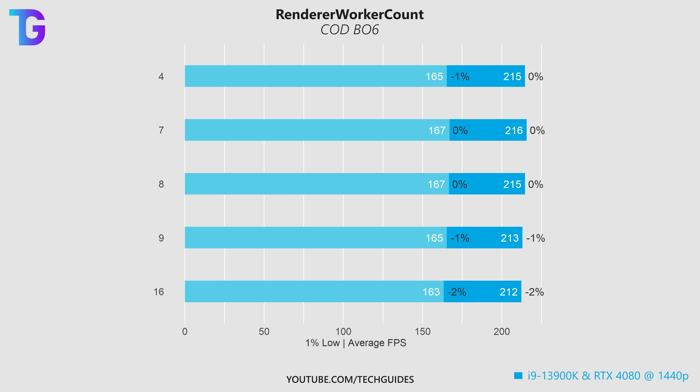On my primary gaming system — an i9-13900K with an RTX 4080 playing at 1440p — a renderer worker count of 7 yields the highest performance in both averages and 1% lows. The differences between different values are pretty small, but you really have to make sure this value is not set to something like 16 if you have an 8-core processor, because then you'll see a significant drop in performance. For this system, the best performance was seen at the number of physical cores minus 1.